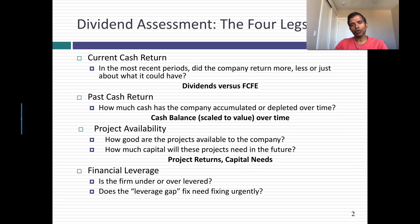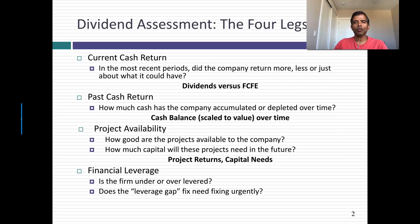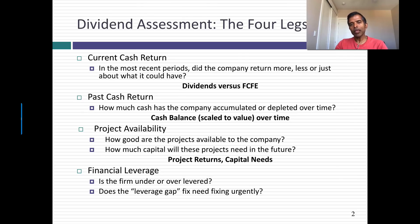To make a judgment on dividend policy, you need to look at four variables. The first is how much is your company returning to its stockholders in the form of dividends and buybacks relative to what it could have returned — the free cash flow to equity. Do this not for one year but for three, four, or five years. See if your company routinely underpays or overpays relative to its free cash flow to equity.